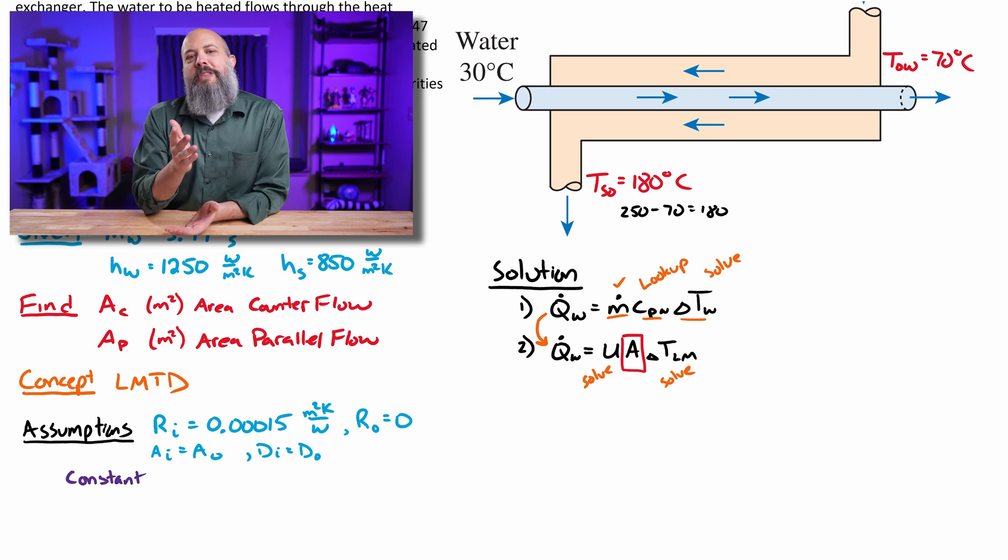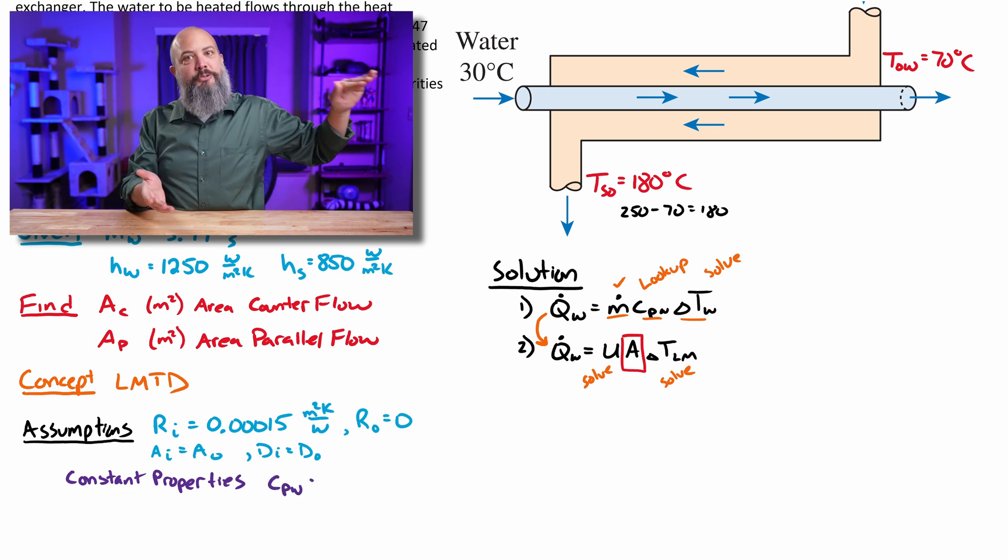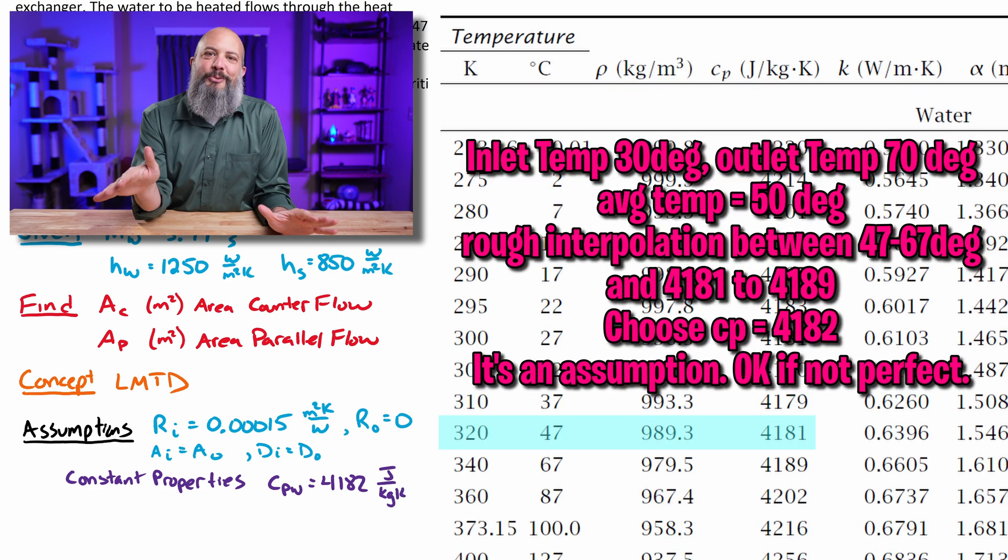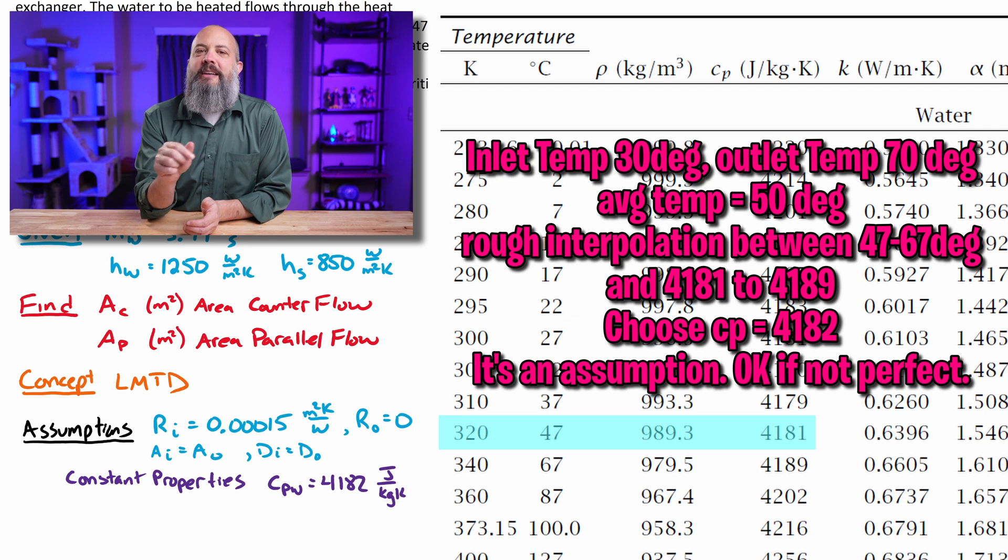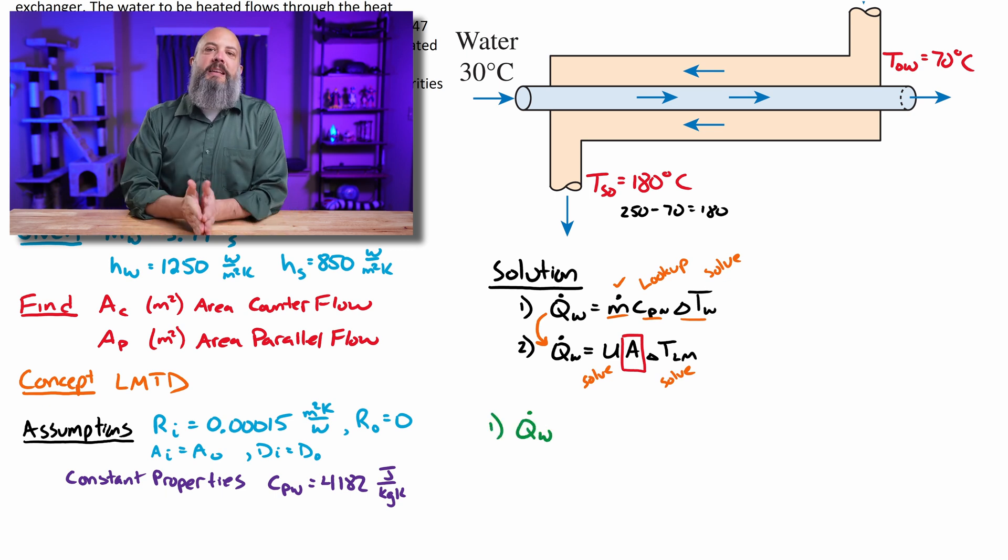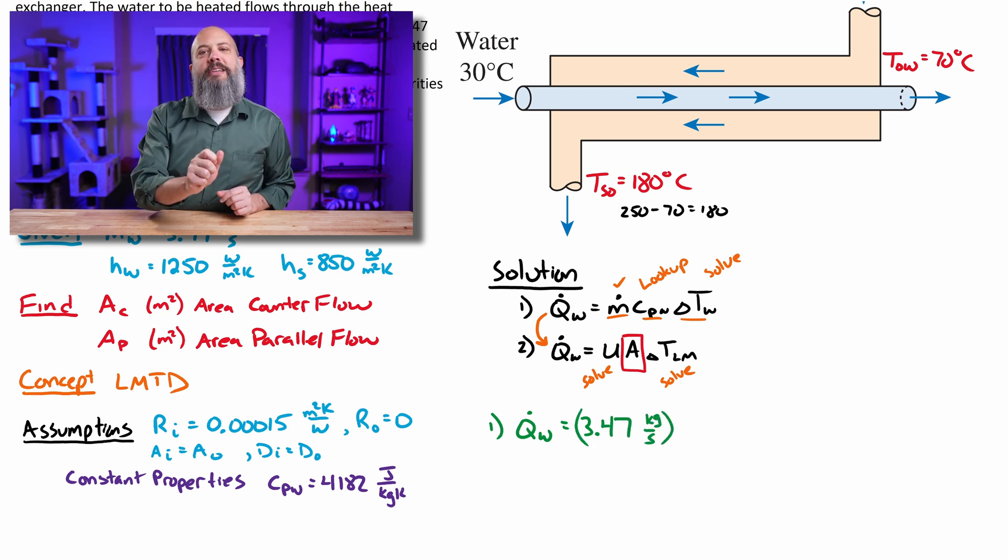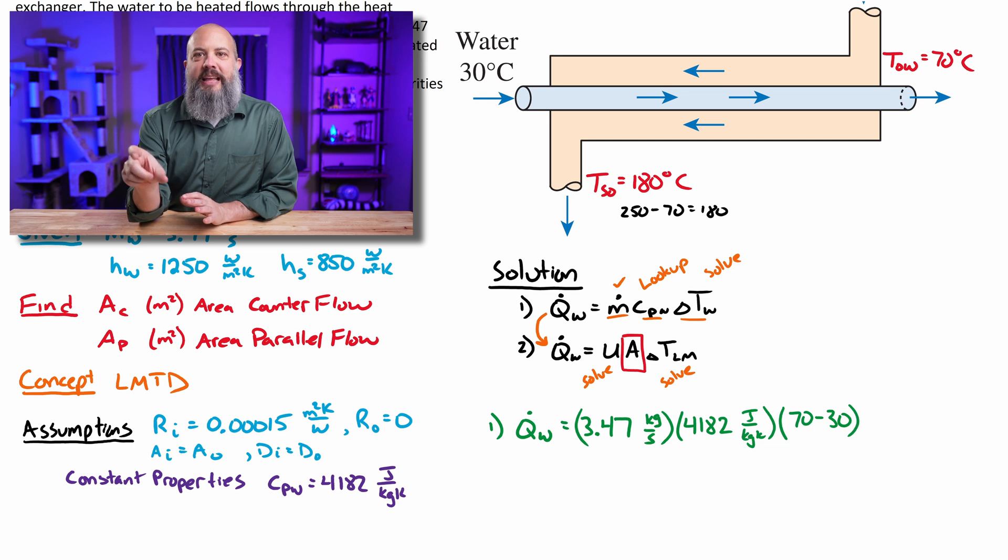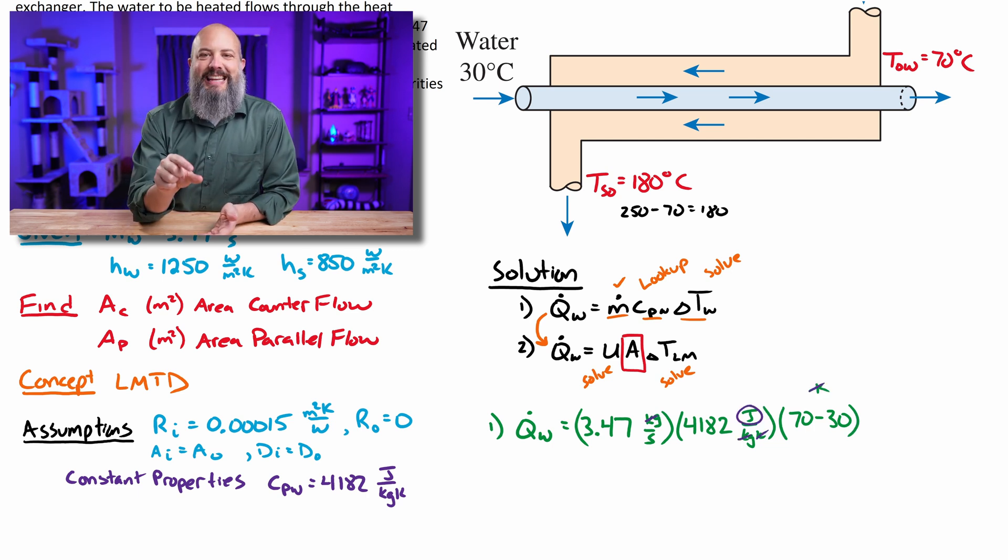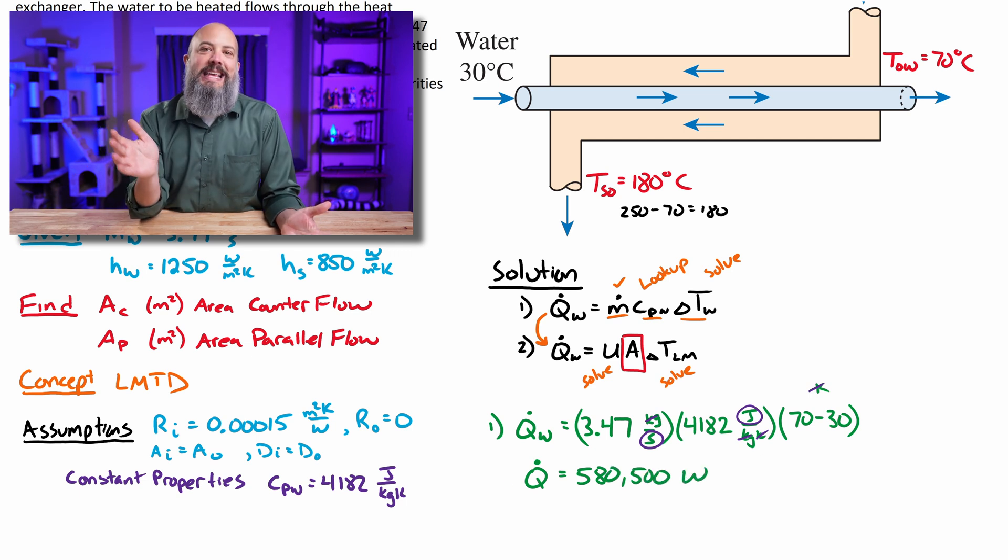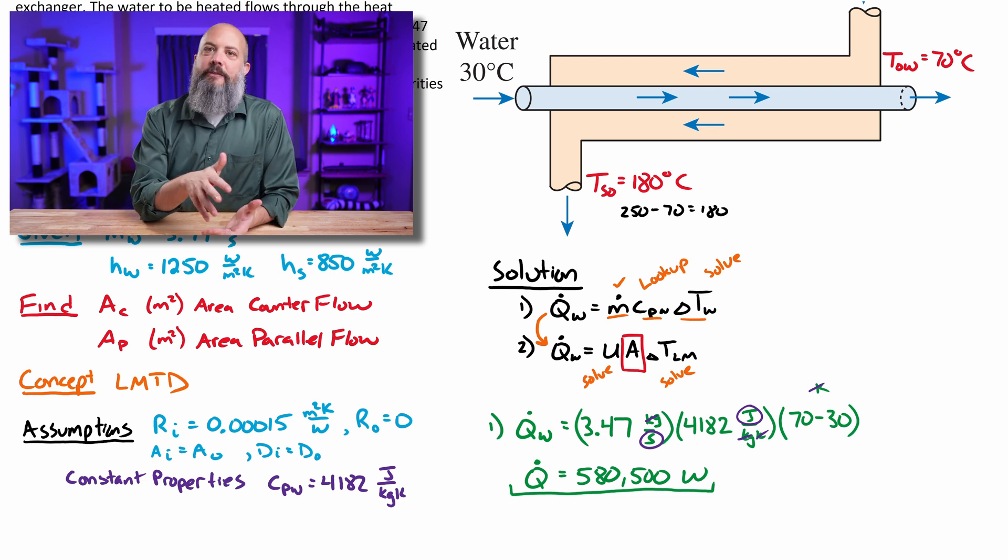Another assumption is that Cp is constant. Technically, as water changes temperature, its Cp will also change, but not by very much. So let's just look up a single value for Cp of 4182 joules per kilogram Kelvin and assume that it's constant. So my equation for rate of heat gained by the water is the mass flow rate 3.47 times Cp 4182 times delta T for just the water 70 minus 30. As I check my units, Kelvin cancels, kilogram cancels, I'm left with joules per second, which is watts. So 580,500 watts or 580.5 kilowatts is the amount of energy gained by the cold water from the steam.